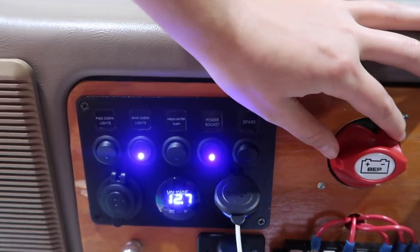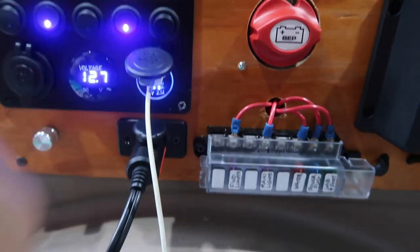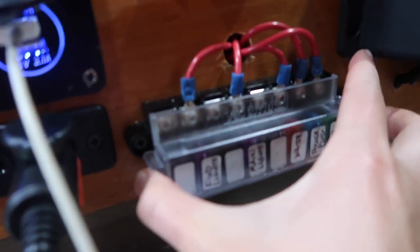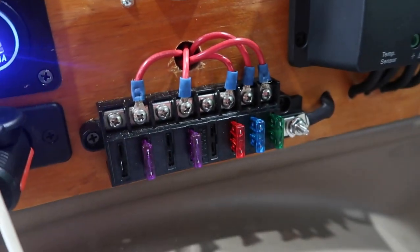So right here is the cutoff switch. I can turn on and off the battery. And then below that is the fuse box. And if you need to see the fuses, you can just slide it off like that.